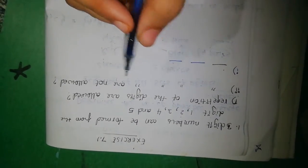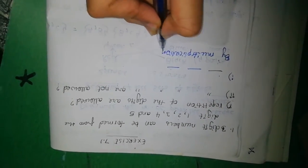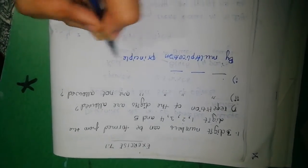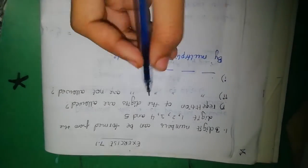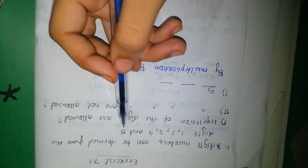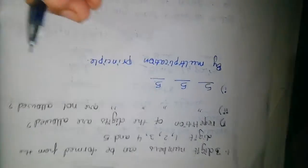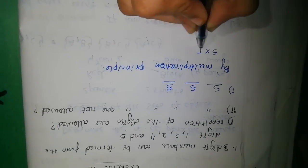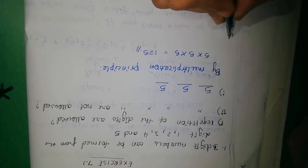First we will see when repetition of the digits is allowed. We solve this using the multiplication principle. We are forming three-digit numbers and repetition is allowed. How many digits are we having? Five. So write five for each place — five, five, five. Multiply: 5 × 5 × 5 = 125. So 125 is the answer for the first condition.